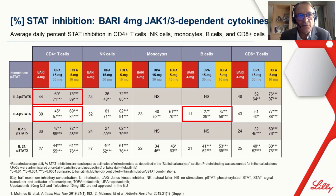Secondly, data for JAK inhibitor-treated subjects revealed cytokine-dependent similarities and differences in the magnitude of STAT inhibition. The percentage of STAT inhibition for IL-2, IL-4, IL-15, and IL-21 signaling, driven by JAK-1/3, was generally highest for tofacitinib and upadacitinib, and least for baricitinib.